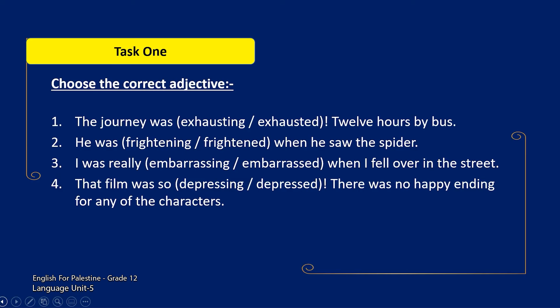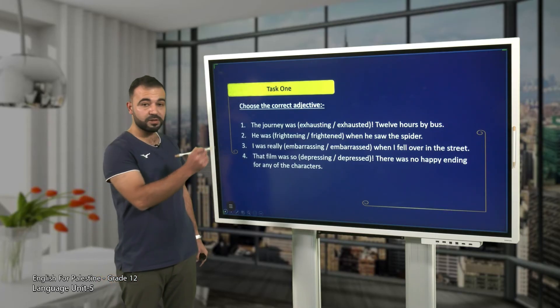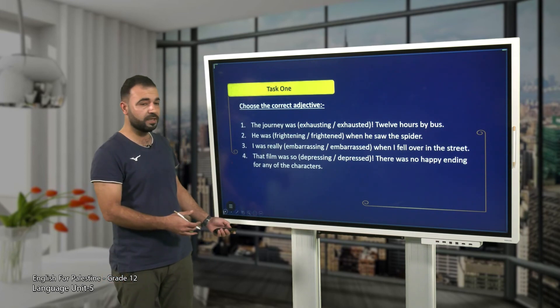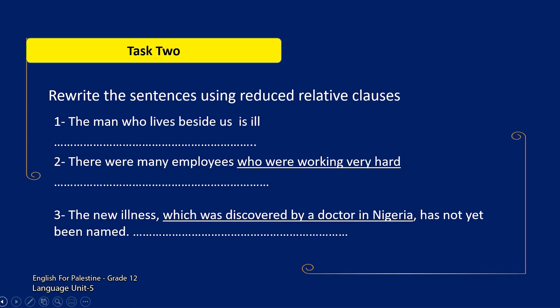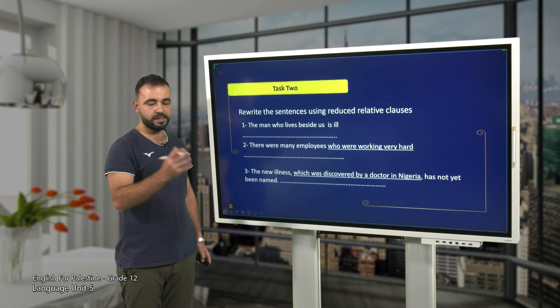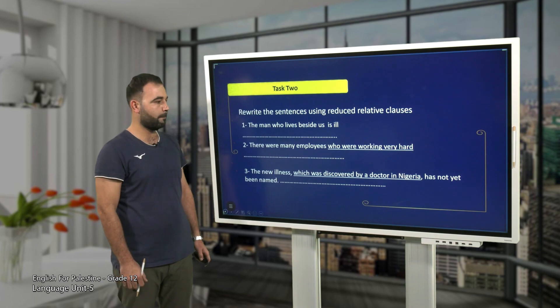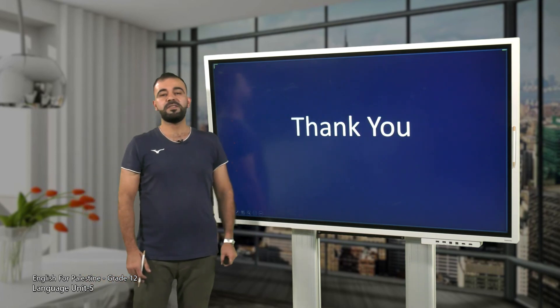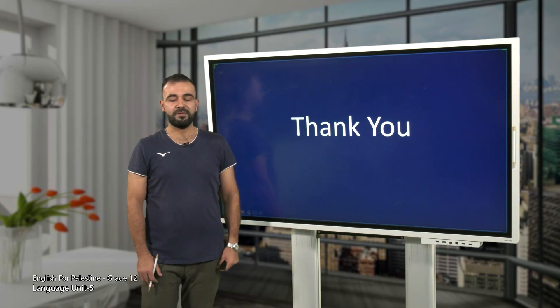Let's end this meeting with this task. Task number one: choose the correct adjective — one, two, three, four — is it the -ing or the past participle form? Task two: rewrite the sentences using reduced relative clauses — read number one, two, three, and rewrite them. Don't forget we have active and passive reduced relative clauses. That's all for today. See you next time. Have a nice day.